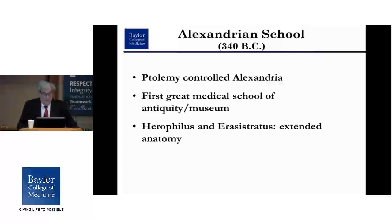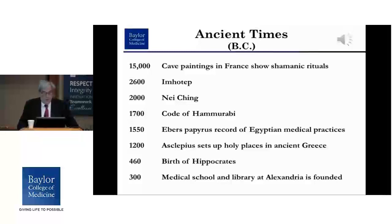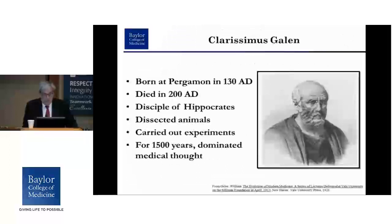Around the same time and a little later, the Alexandrian school under Ptolemy was important because it was the first great medical school of antiquity, with a huge museum housing information in scrolls and books that were actually lost in a fire over time. Looking at a period of about two to three thousand years, we can see the first medical schools and libraries in Alexandria being founded, preceded by Egypt, China, and cave paintings in other parts of the world.